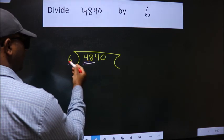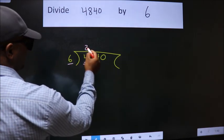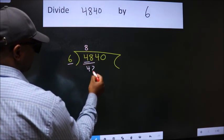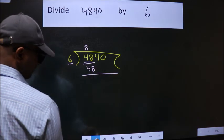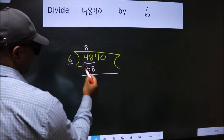When do we get 48 in 6 table? 6 times 8 is 48. Now, we should subtract. We get 0.